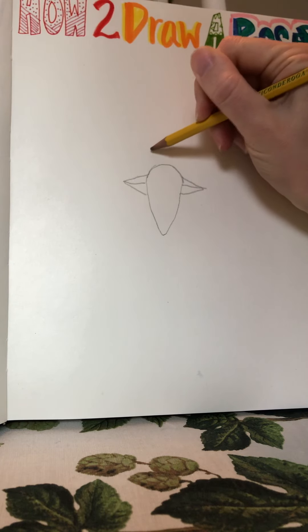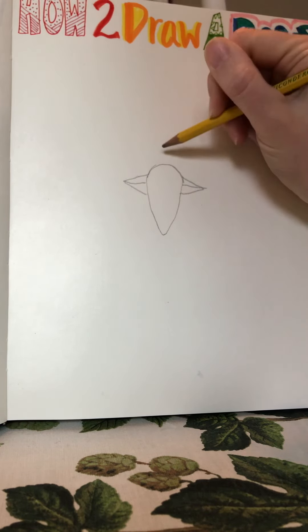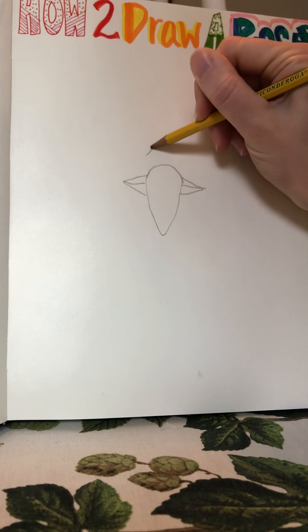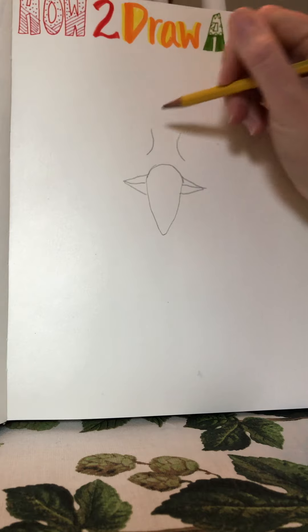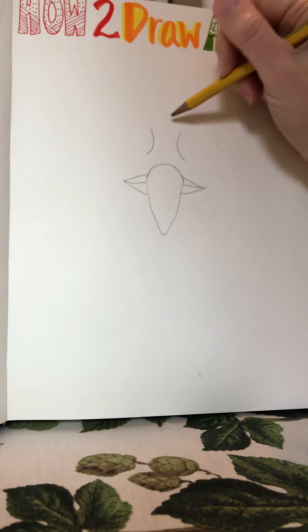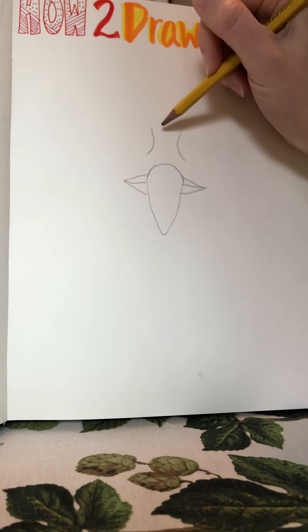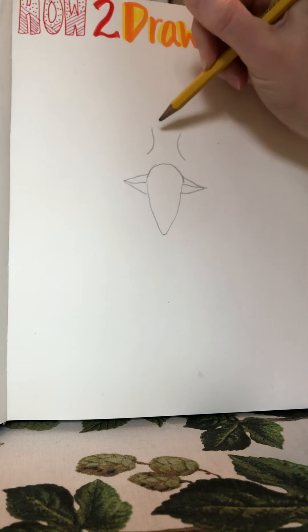Next I'm going to draw opposite parentheses. This is for the eyes. This is a guideline for you to know where you want to draw the eyes. But before you do that, you now have to draw the comb of the rooster, which is the top part of their head.